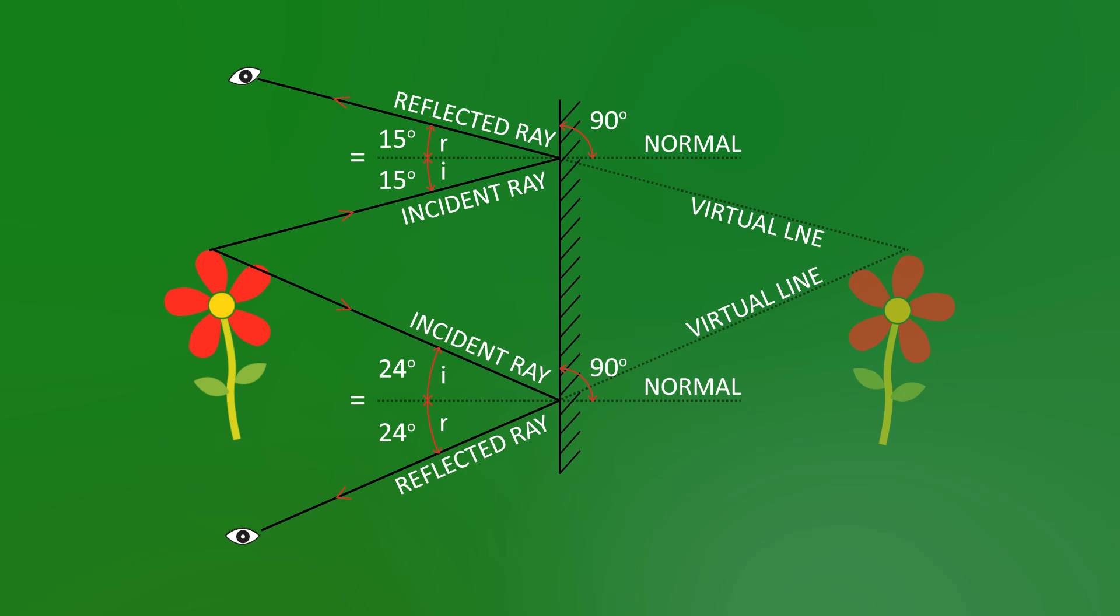So, a few points here. The flower is actually back to front. Or, in physics-y terms, laterally inverted. And this happens with all mirror images.